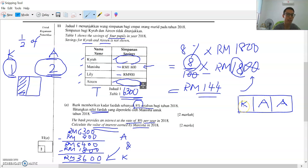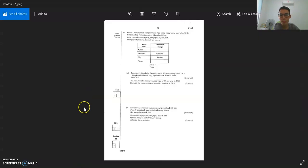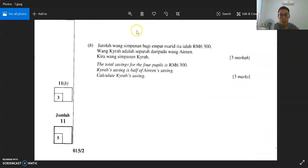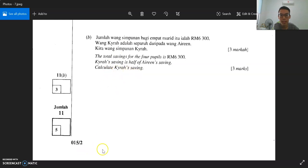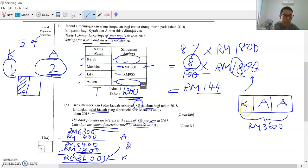Sebab Kaira duit dia separuh daripada Irene. So this total here is RM3600. Macam mana kita tahu? Sebab kita kira dari sini, RM3600. Kita ambil jumlah RM6300, kita tolak Lily punya, tolak Manisha punya. Yang baki ialah Kaira dan Irene punya. Question asks for Kaira's saving only. This is Kaira, K for Kaira. This is one part only. Irene has two parts, 1, 2.